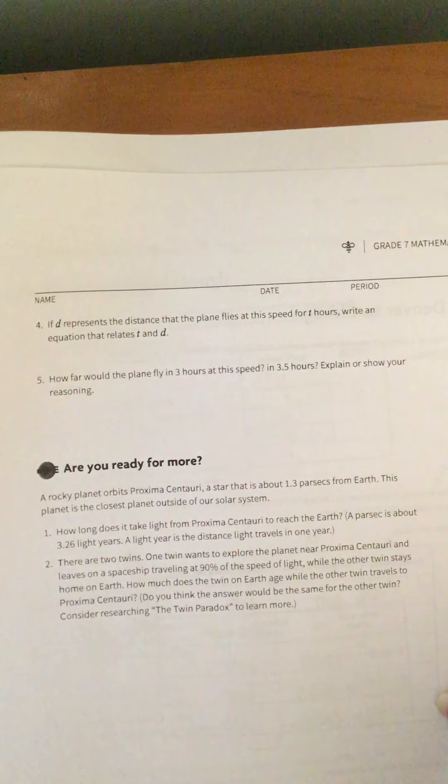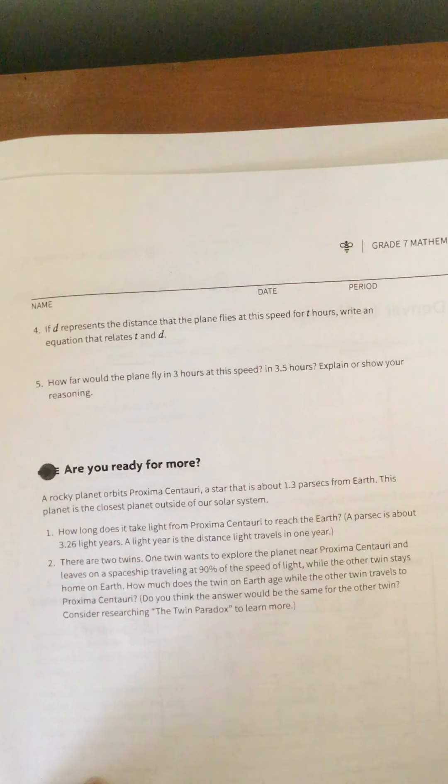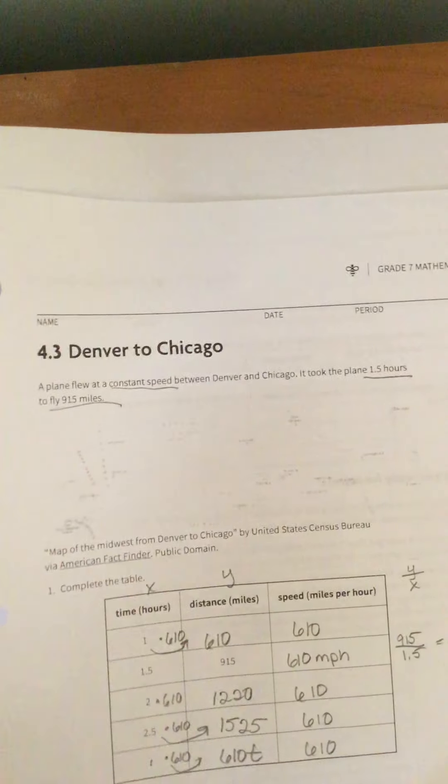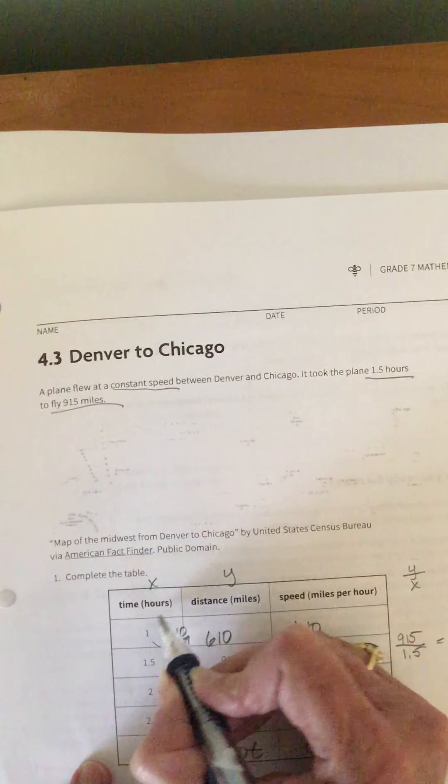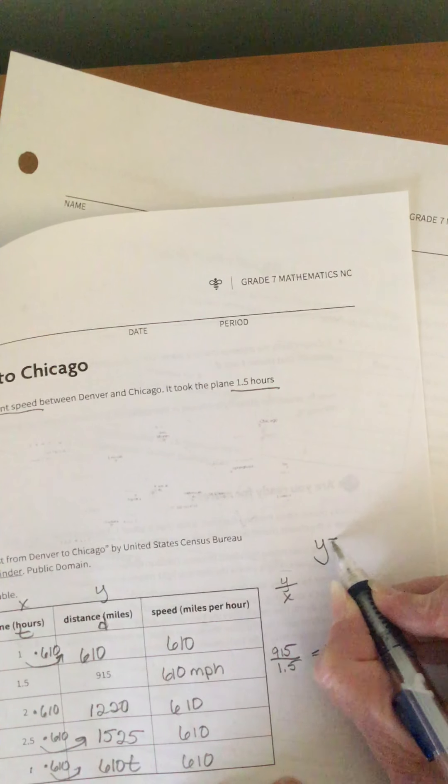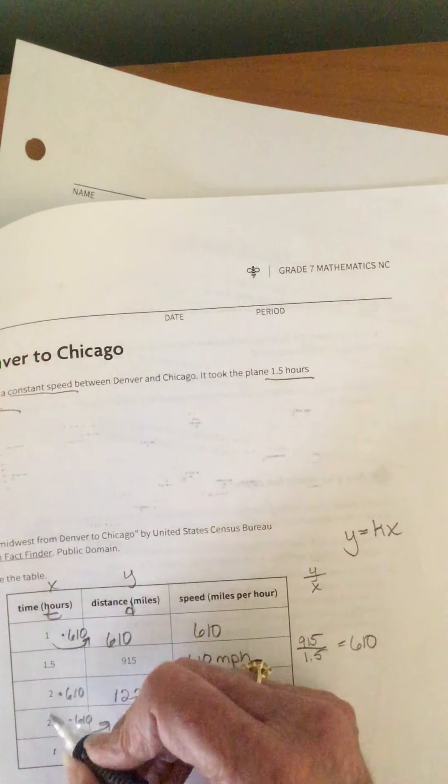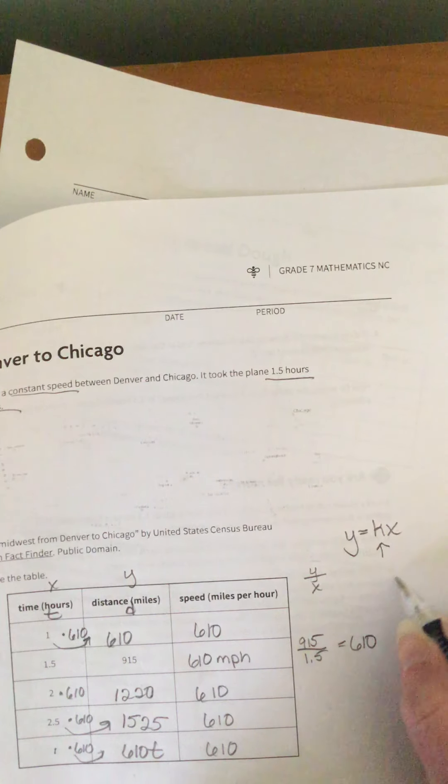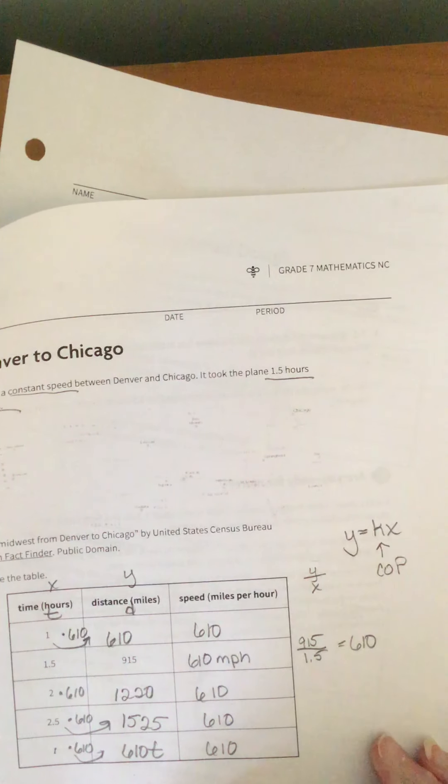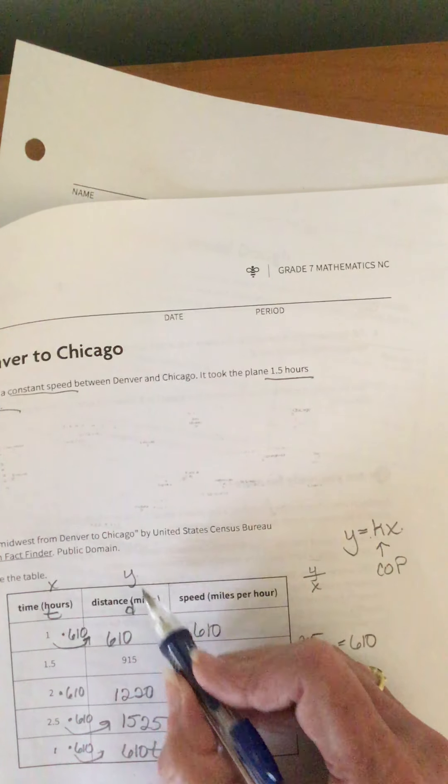So how far does the plane fly in one hour? 610 hours. How far would the plane fly in T hours? Any number of hours at this speed, and we would take the 610 and multiply it by the T. Alright, now it says, if D represents the distance that the plane flies at this speed for T hours, write an equation that relates T and D. Alright, so let's go back to this up here. This is T, this is D. Equations are written in the form of Y equals KX, where Y is our Y column, X is our X column, and K is the constant, or the COP.